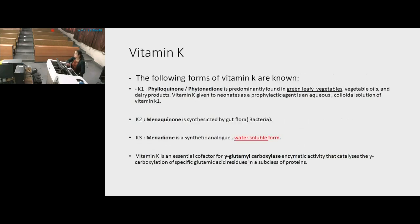Vitamin K is of 3 types: K1, K2, and K3. K1 is also known as phylloquinone and phytonadione. This comes basically from green leafy vegetables, and it is the form given to neonates as a prophylactic agent — 1mg at birth — as an aqueous colloidal solution of vitamin K.